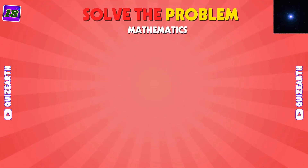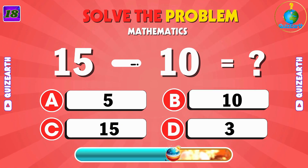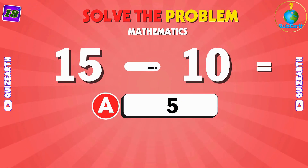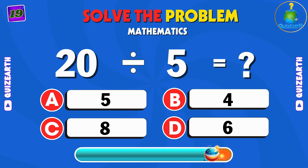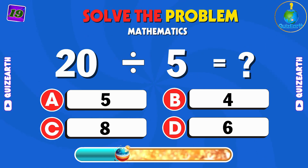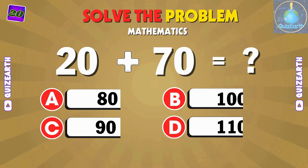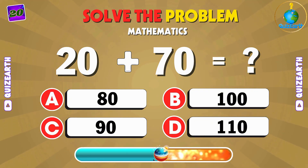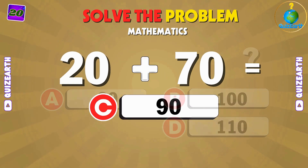D: 90. What's 15 minus 10? A: 5. Let's crack this one — how many times does 5 fit into 20? Think fast and answer before time runs out. B: 4. Add 20 and 70 together. C: 90.